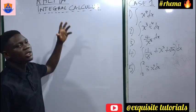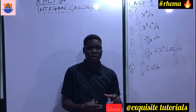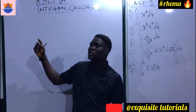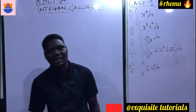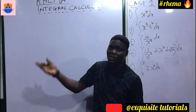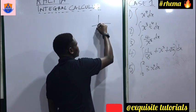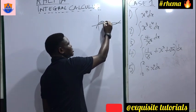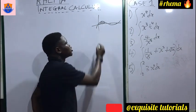Integration is the reverse of differentiation. Anytime you differentiate something and want to do the reverse, you are doing what we call integration. While differentiation is the rate of change of one variable to another, integration is all about the area under a curve or a line. So if you have a curve and you're looking for the area under it, you are doing integration.